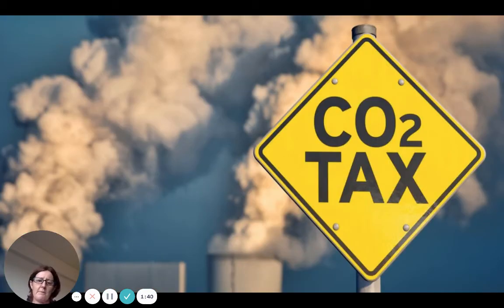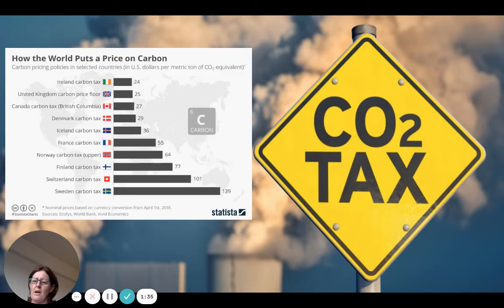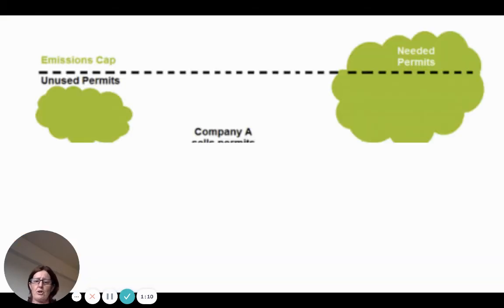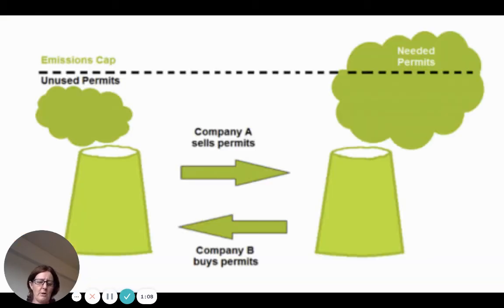Local or national governments can introduce a carbon tax. We've seen a number of high-income countries do this, usually around $25 per metric ton, though some are quite high. Typically there's a two or three year notice period, and the per-ton cost may increase over time, giving businesses and individuals time to switch to renewables — or if that's too costly, to at least reduce their CO2 output.